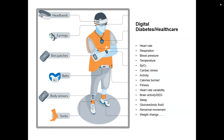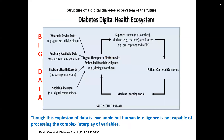In diabetes, AI can help by using different wearable devices — from headbands to earrings, skin patches, belts, body sensors, and socks — in a digital diabetes healthcare system. We can monitor heart rate, respiration, blood pressure, temperature, SpO2, cardiac stress activity, calorie burn, fitness, heart rate variability, brain activity, sleep, glucose, abnormal movement, and weight change — multiple parameters for a person with diabetes or metabolic disorders.